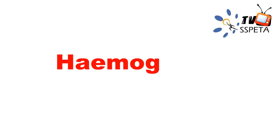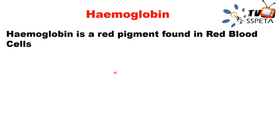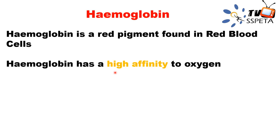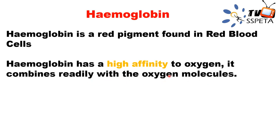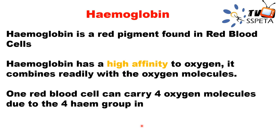Now we move to the next topic: hemoglobin. Hemoglobin is a red pigment found in red blood cells. It has a high affinity for oxygen — it combines readily, attaches rapidly, and binds quickly with oxygen molecules. One red blood cell can carry four oxygen molecules because hemoglobin has four heme groups.